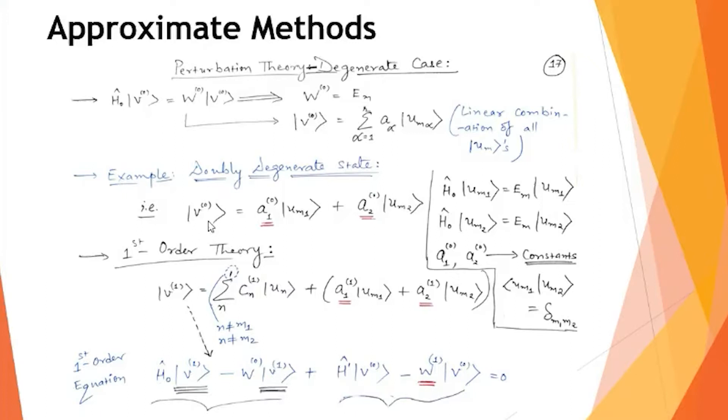When H0 operates on um1 or um2, the energy is the same but the states are different — these are doubly degenerate states. Using um1 and um2, I define v0, the zeroth-order term, as a linear combination with coefficients a10 and a20 (the superscript zero indicating zeroth-order). So um1 and um2, the eigenstates of H0, form the basis used to expand v0.